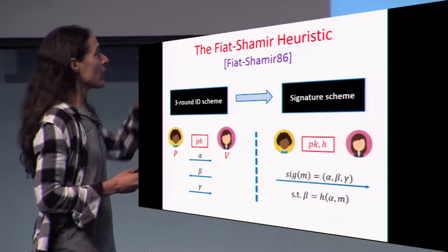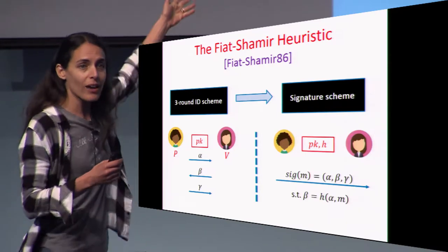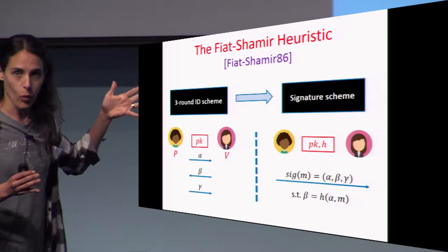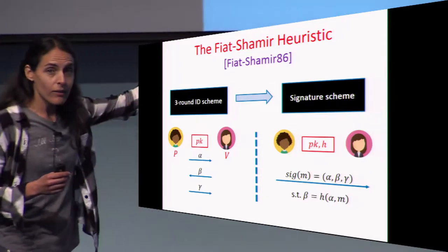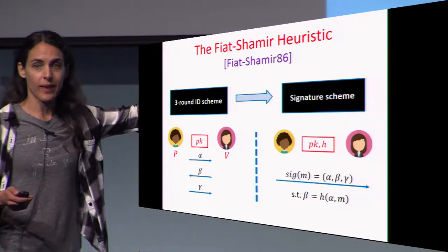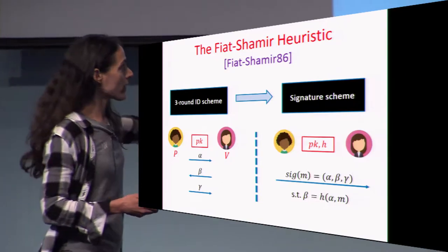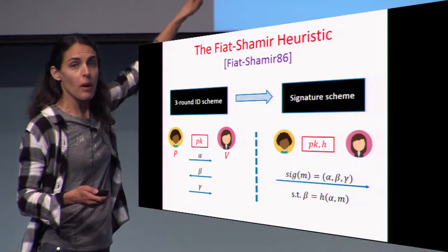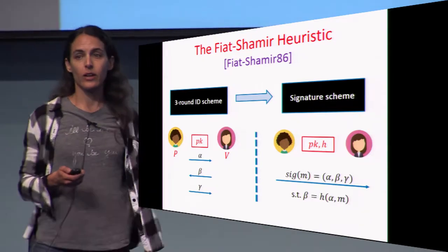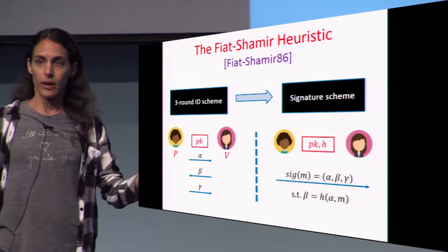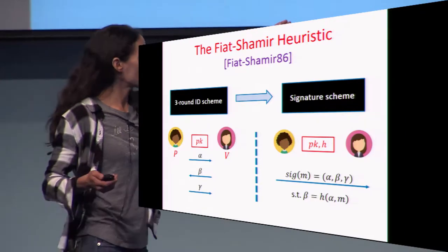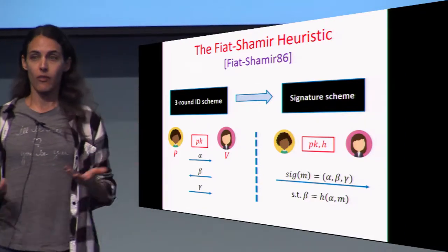The idea is the following: the signer is going to produce the entire three messages — denoted throughout this talk by alpha, beta, and gamma — on his own. Subject to beta needing to be a hash of the first message alpha and the message to be signed M. So when you want to sign message M, you generate alpha like the prover, beta will simply be a hash of alpha and M, and then you generate gamma. Alpha, beta, gamma is a proof, accepted if it's an accepted transcript by the verifier of the ID scheme, and if beta is indeed the hash of alpha and the message.